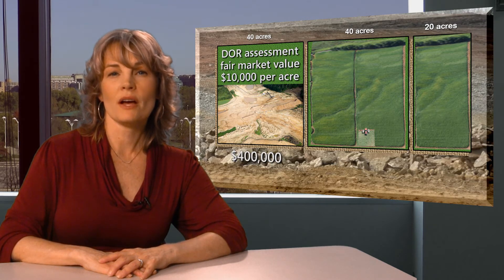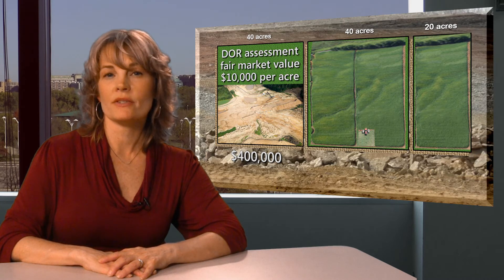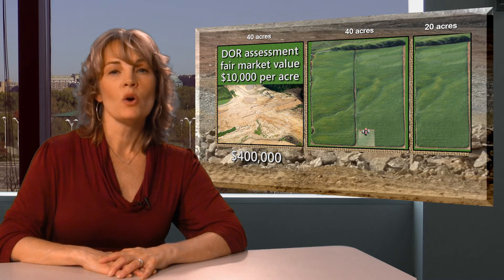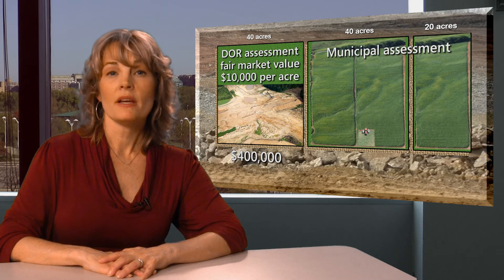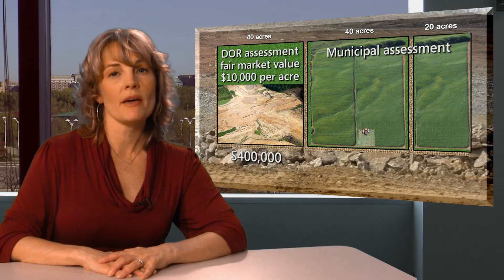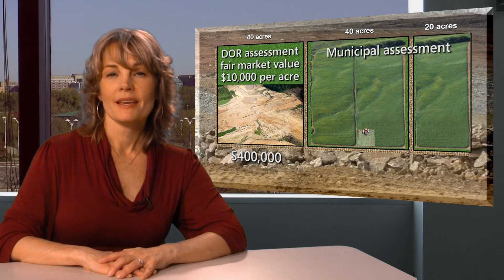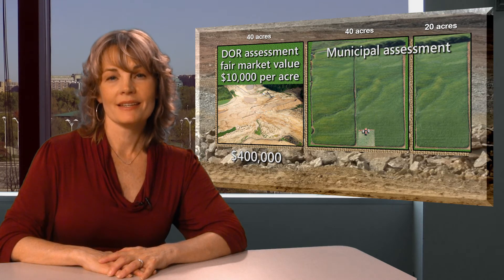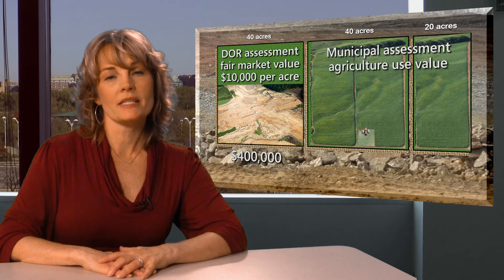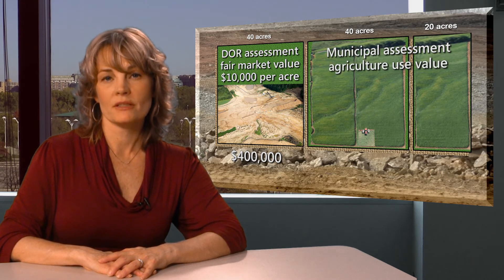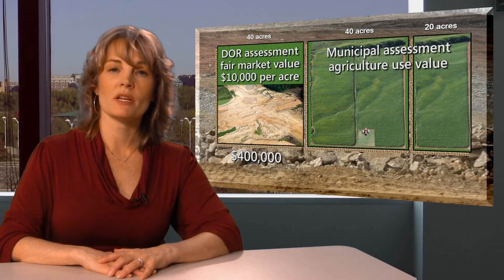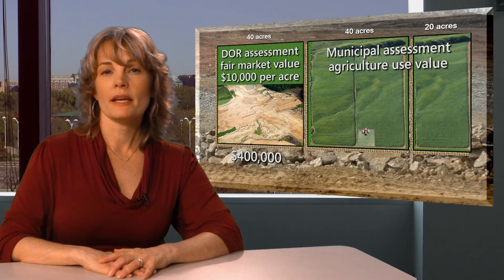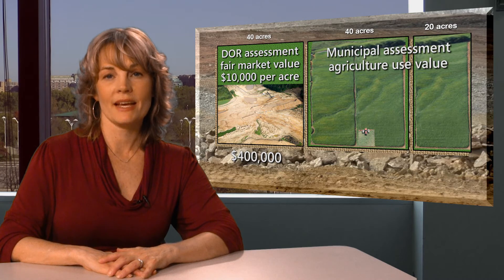In 2012, the remaining 60 acres of the sale will be assessed by the municipal assessor. The classification will be determined by the use of the property. In this case, since the farmer is using the land for farming, the classification would be agricultural. The assessor would use the use values for the municipality in determining the assessment of the 60 acres.